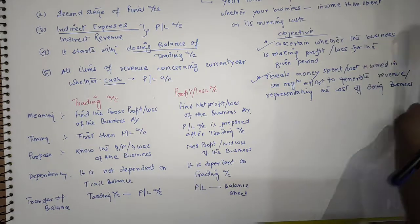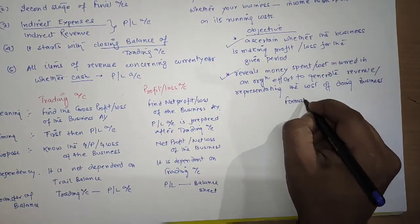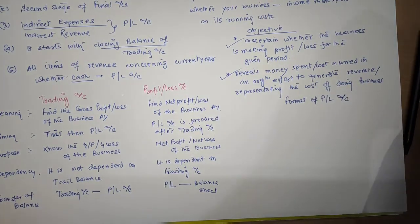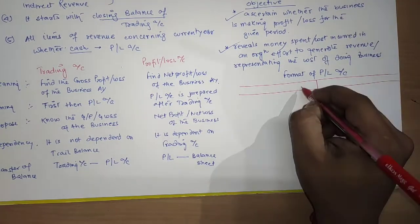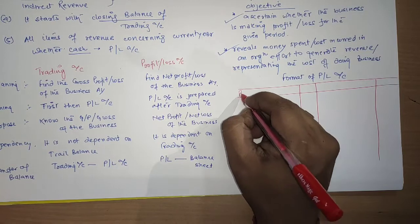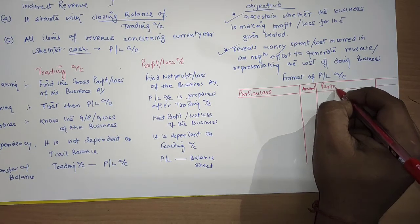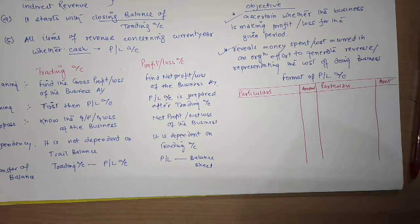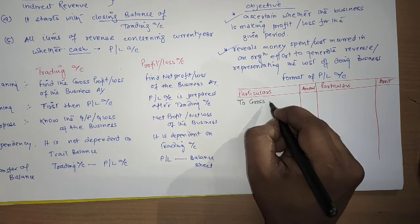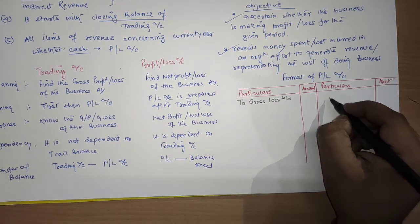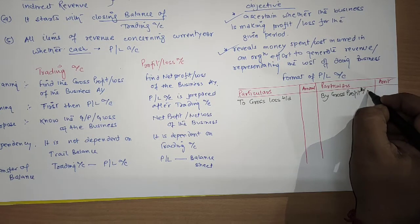Now let us prepare the format of the profit and loss account. The format has two sides: particulars and amount on both sides. If we have a loss in the trading account, we start with gross loss brought down on the debit side. If we have a profit in the trading account, we write gross profit brought down on the credit side.